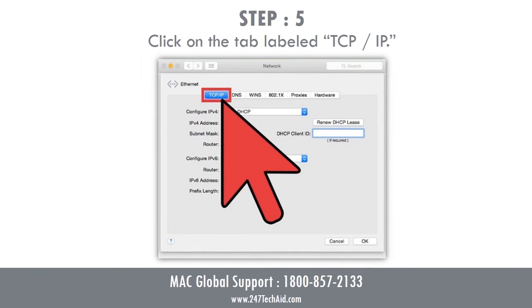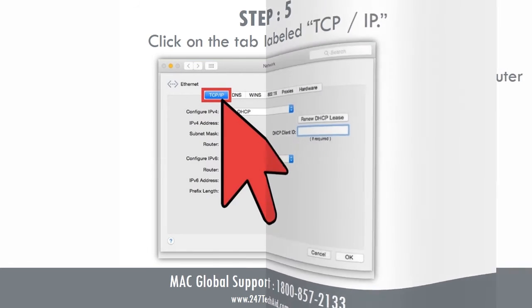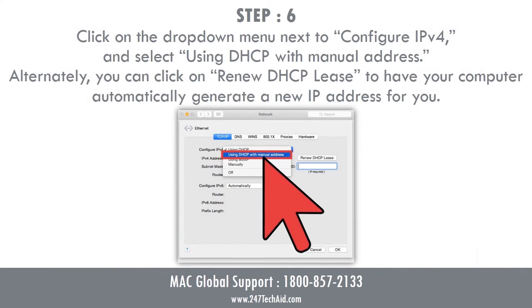Step 5: Click on the tab labeled TCP/IP. Step 6: Click on the drop-down menu next to Configure IPv4, and select Using DHCP with Manual Address.